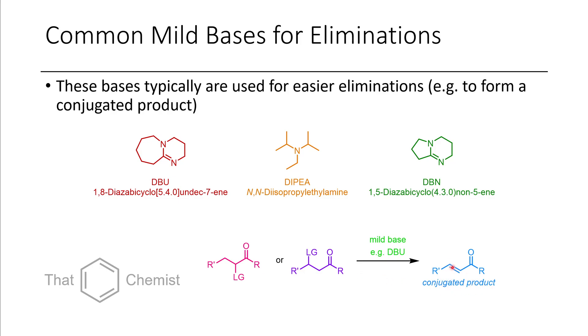Conjugated products, conjugation is when you have like double, single, double, or triple, single, triple, or triple, single, double, same idea. Those tend to be very stable products, and nature wants those to be made. And so what this means is it means it's easier to form those products.